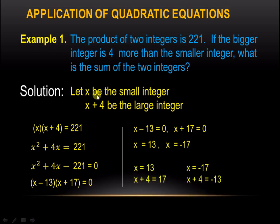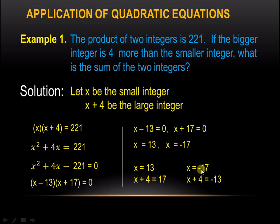Now, since we said that x is the smaller integer and x plus 4 is the bigger integer, we have these two sets of numbers. For x equals 13, the smaller is 13 and the larger is 17. For the other case, x equals negative 17 for the smaller and x plus 4 equals negative 13 for the larger.